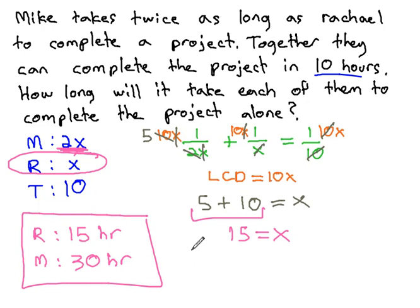And we end up with our solution. Rachel takes 15 hours, and Mike takes 30 hours. We found that solution by looking at their individual times, represented algebraically, and the teamwork time. By adding the reciprocals of the individual, it will equal the reciprocal of the team.